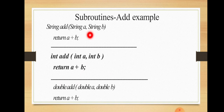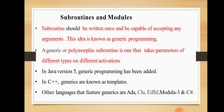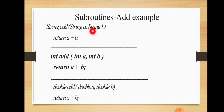If you pass a double where a string is expected, it will not be accepted. What type of arguments the subroutine accepts is determined by the parameter types. We need to learn what generic subroutines mean. A subroutine should be written once and be capable of accepting any type of arguments. That kind of programming is known as generic programming.